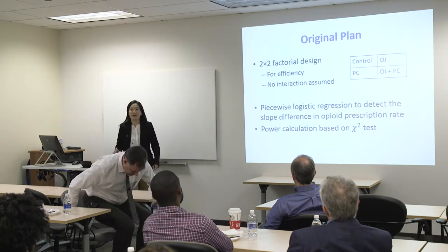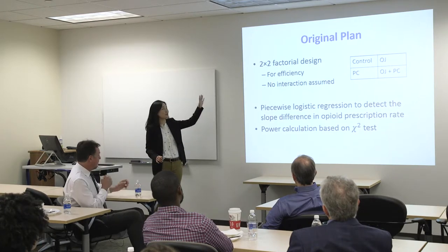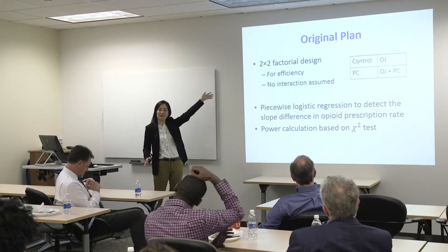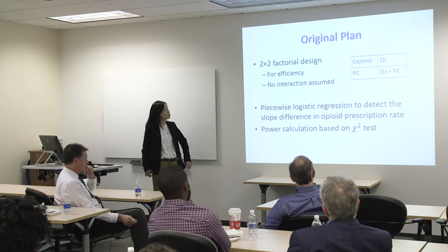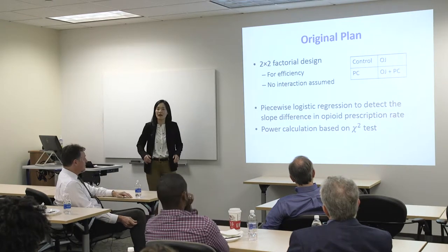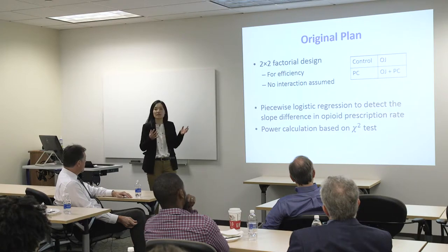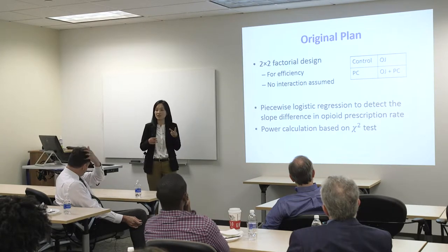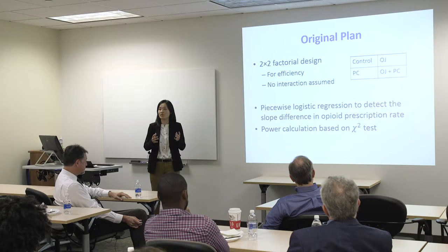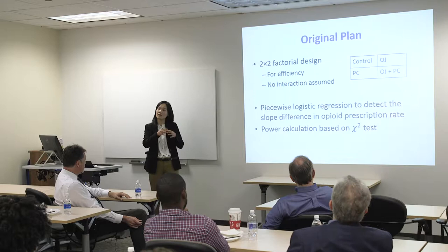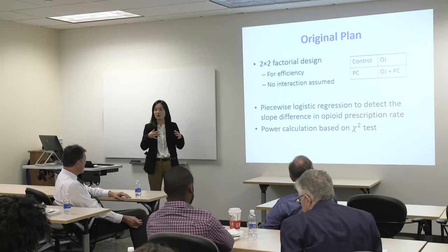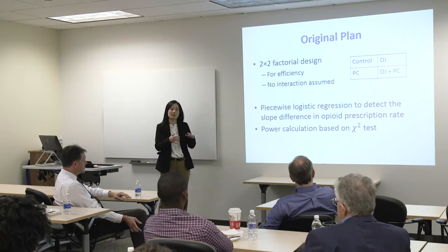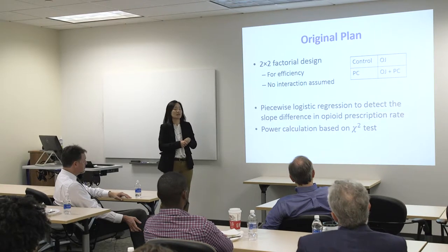So just to review, this was our original plan in the original application. We are going to go for the 2x2 factorial design. The reason was just for efficiency. Using a 2x2 design, you can actually test the effect of two different interventions using just a sample size for one trial — only if you can assume no interaction effect between the two treatments. So we assumed no interaction, and that was our design.